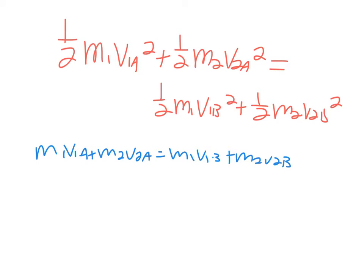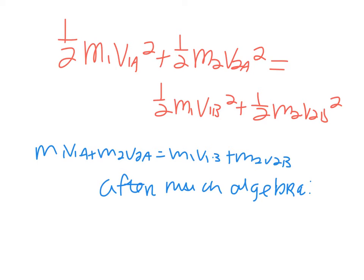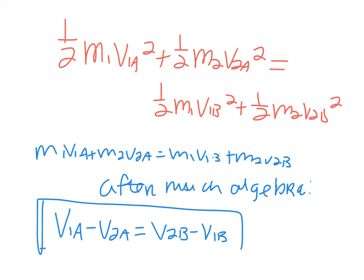Using conservation of kinetic energy and conservation of momentum and doing a whole bunch of algebra — substituting, square roots, and all that — after much algebra, we arrive at a very simple equation: V1A − V2A = V2B − V1B. Here, V1A and V2A refer to the velocities of objects 1 and 2 before the collision, and the B subscripts refer to after. This equation applies to elastic collisions.